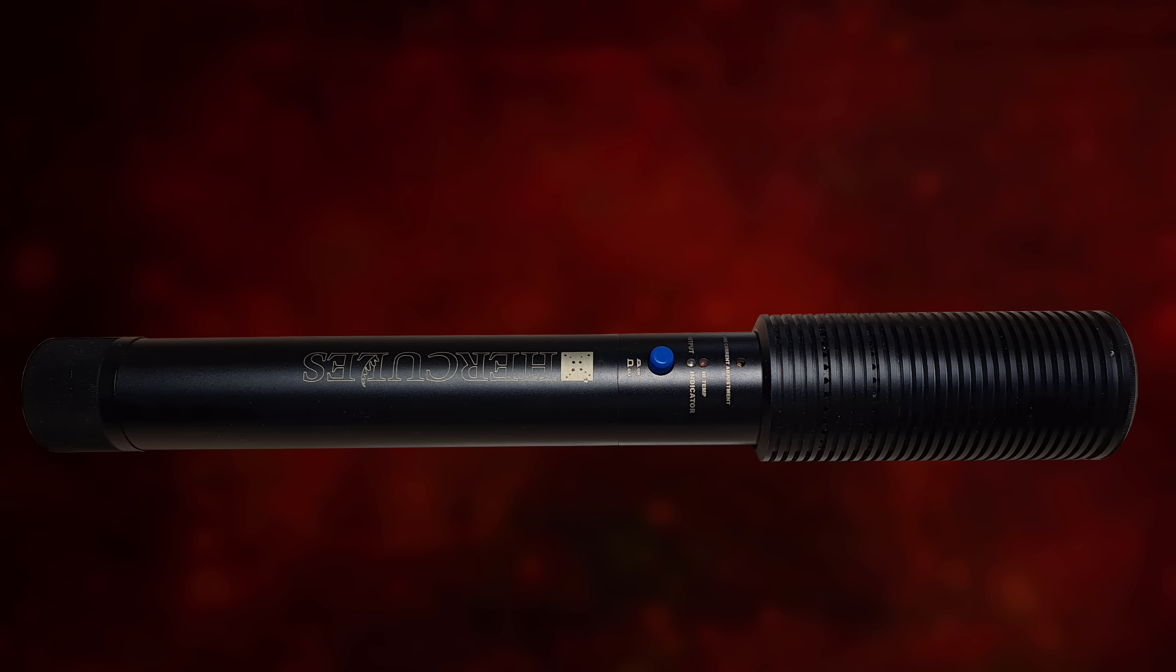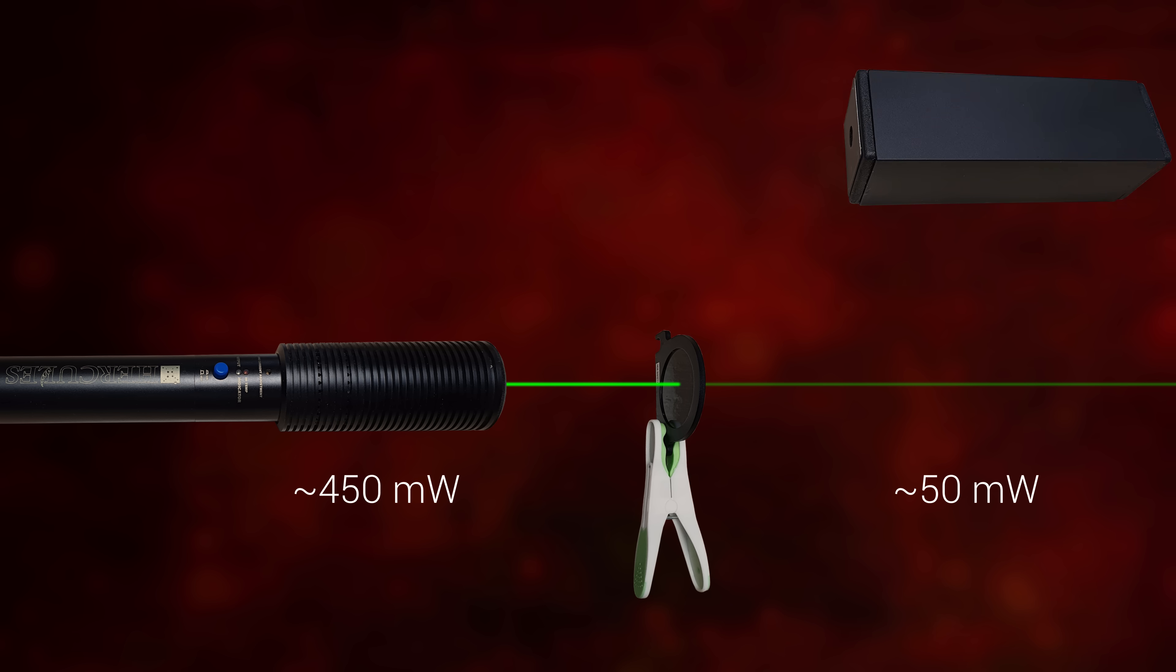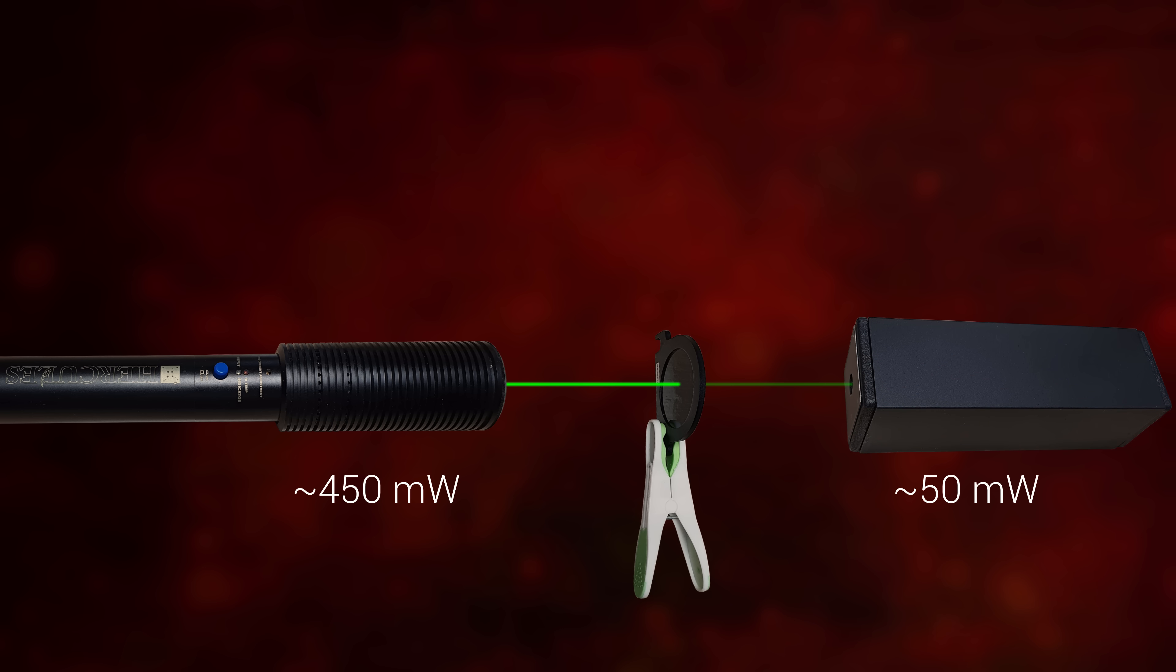I'll use the beam from the Hercules laser. The 450 milliwatts beam will pass through the ND8, well ND9, filter. After the filter the beam will be around 50 milliwatts and safely terminated in a beam dump. A beam dump is easy to make. I have a video on how I made mine.